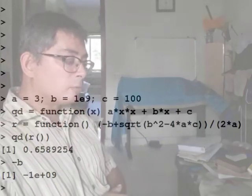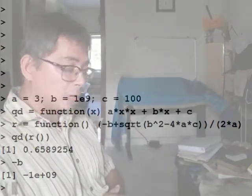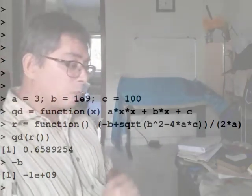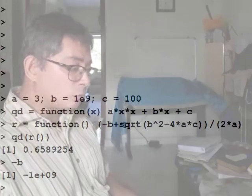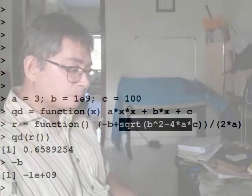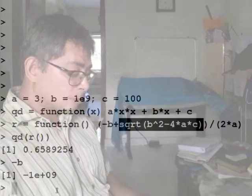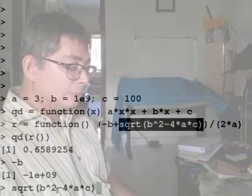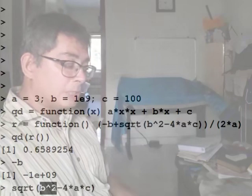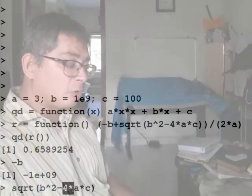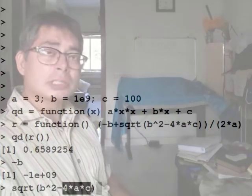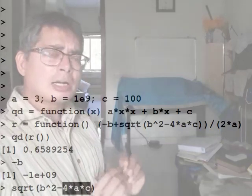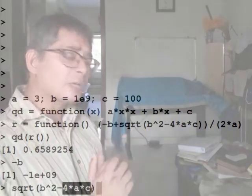And the main problem that occurred here is because when I computed that minus b, that was a huge thing: minus 1 times 10 to the power 9. And when I computed that square root of this, this quantity, this b squared was pretty huge. And 4ac compared to that was very little. So it hardly influenced the significant part.